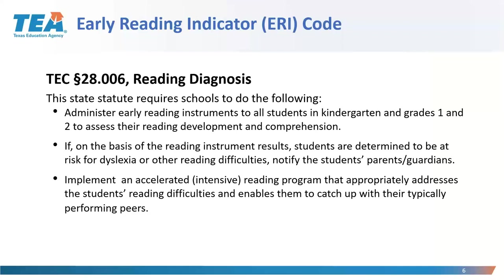The statute requires that schools do three things. First, administer the early reading instrument to all students in kindergarten and grades one and two to assess reading development and comprehension. For this year and moving forward, those tools must be commissioner-approved unless you have a waiver. Second, if students are determined to be at risk for dyslexia or other reading difficulties, ensure you're notifying the students' parents and guardians.